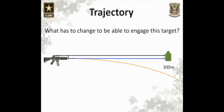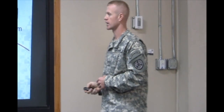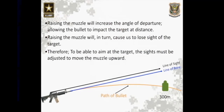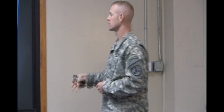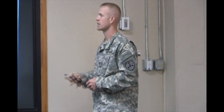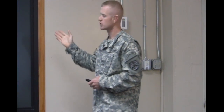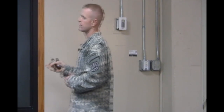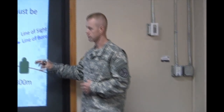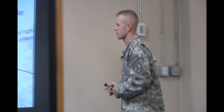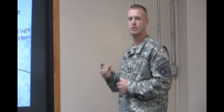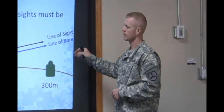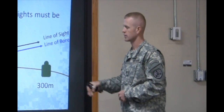Now that we have these three parts of trajectory, what has to change in order for us to be able to engage this target at 300 meters? We have to increase the angle of departure. Raising the muzzle will increase the angle of departure, allowing the bullet to impact farther downrange. If you raise the muzzle without moving the sights, it would be very hard for you to see through the sights and still look at the target. Therefore, in order for us to be able to aim at the target and hit our target, we have to zero the sights to where the line of bore and the path of the bullet intersect.